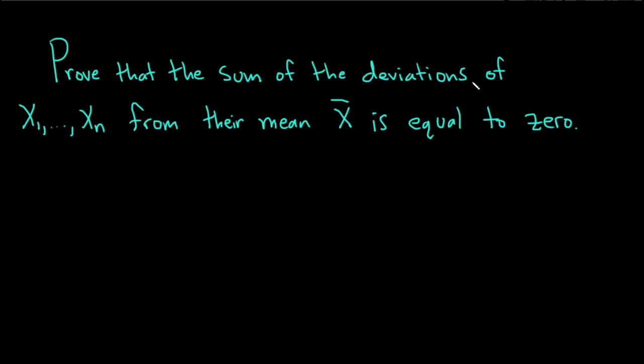Prove that the sum of the deviations of x sub 1 to x sub n from their mean x bar is equal to 0.